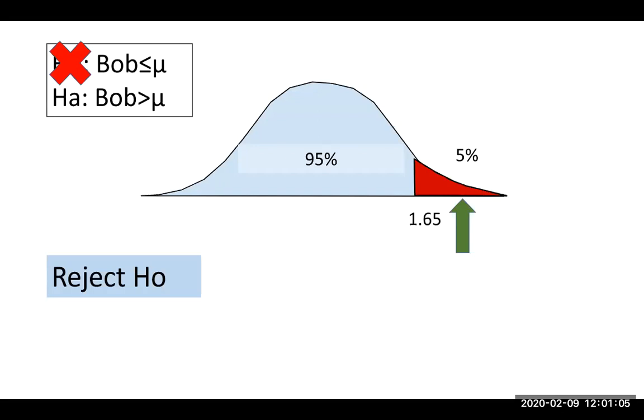Now when I reject the null, I have to call grandma and tell her what I found, and I can say that I found that Bob's score is higher than other people. Now the same thing we did with the two-tailed test would work. If Bob's score fell in the middle here, then I would fail to reject the null and conclude that Bob is the same as or less than everyone, or I would probably just conclude Bob is not higher than everyone else, something that would be clear for grandma.